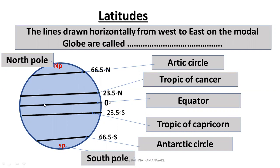The longest latitude is the equator. When moving northwards or southwards, these latitudes become shorter and shorter. Finally they become a point — the North Pole.